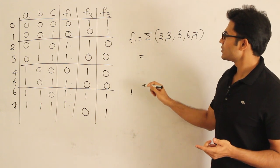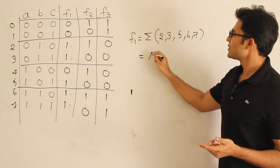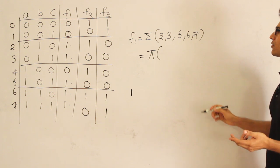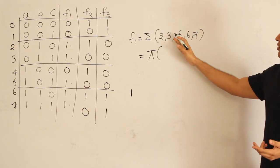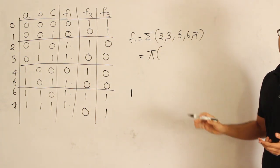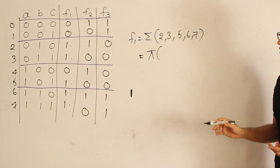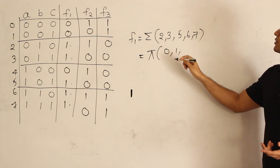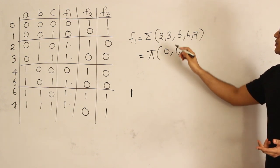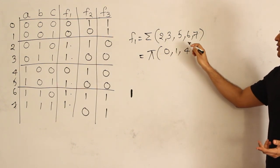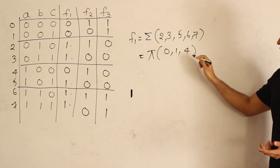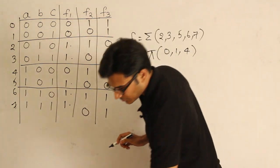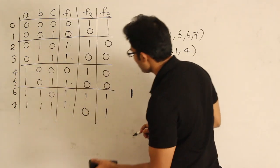You can represent the same function as pi — product of sums. Whatever terms are not in the sum of products, you put them in the product of sums. What terms are not there? 0, 1, and 4 are not there. So f1 as product of sums is pi(0, 1, 4).